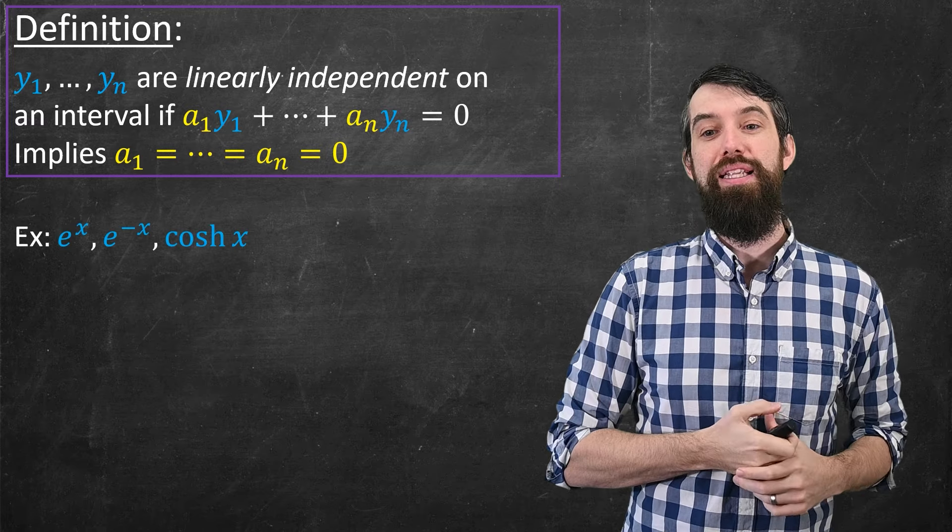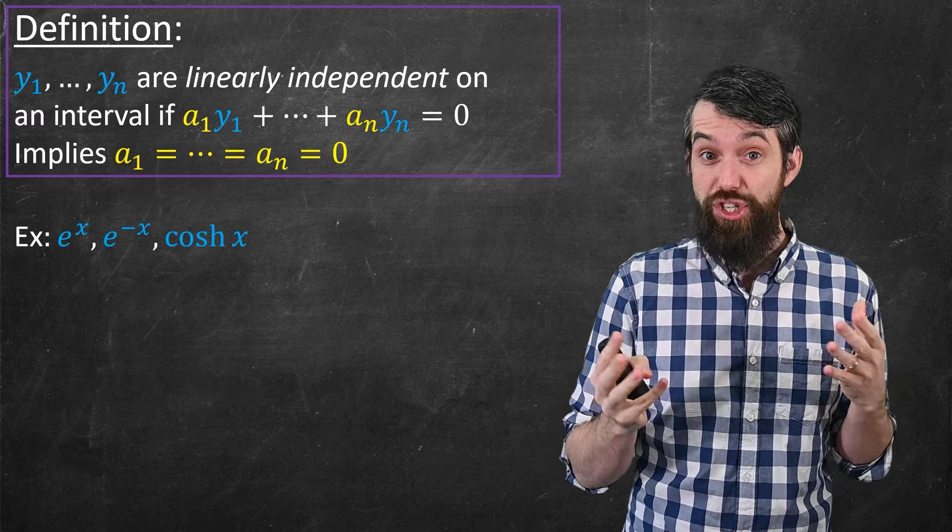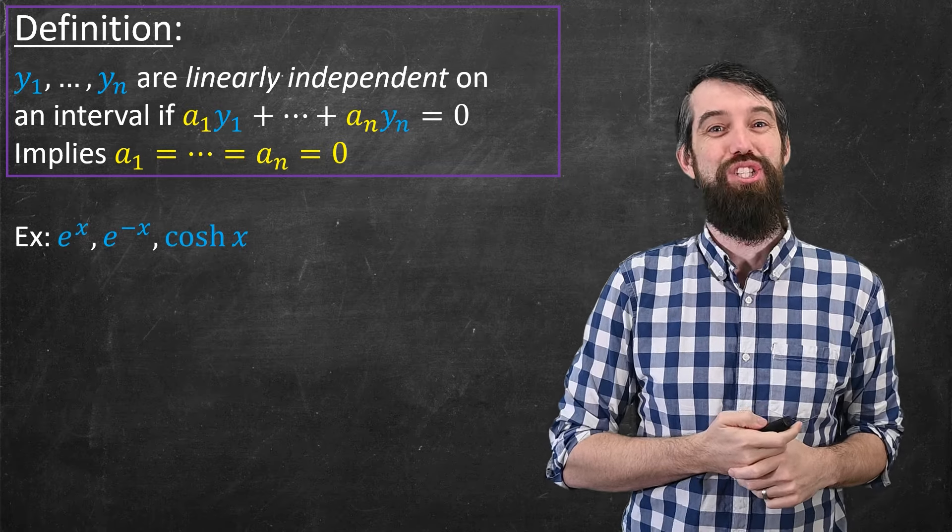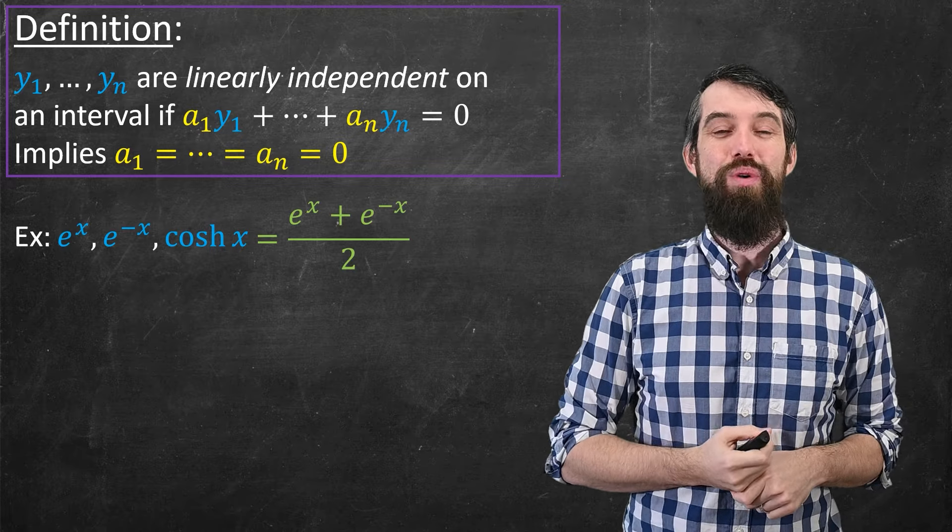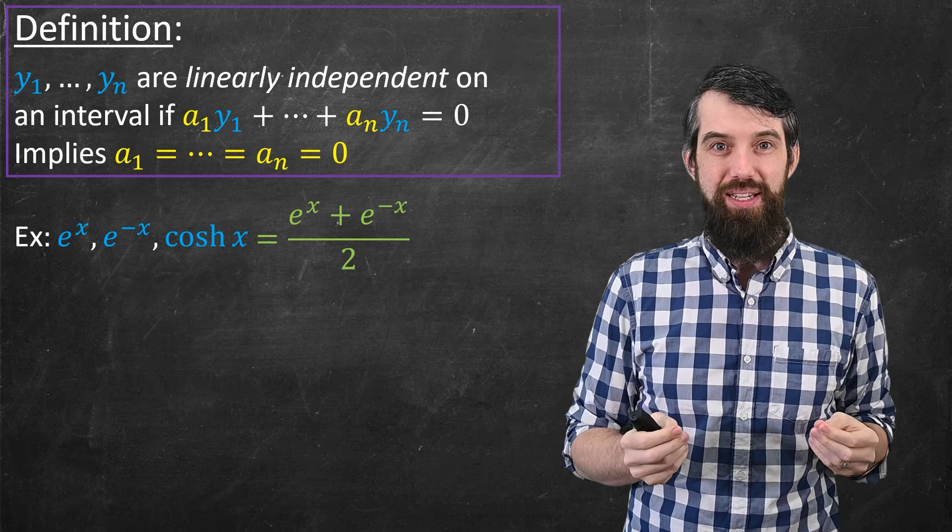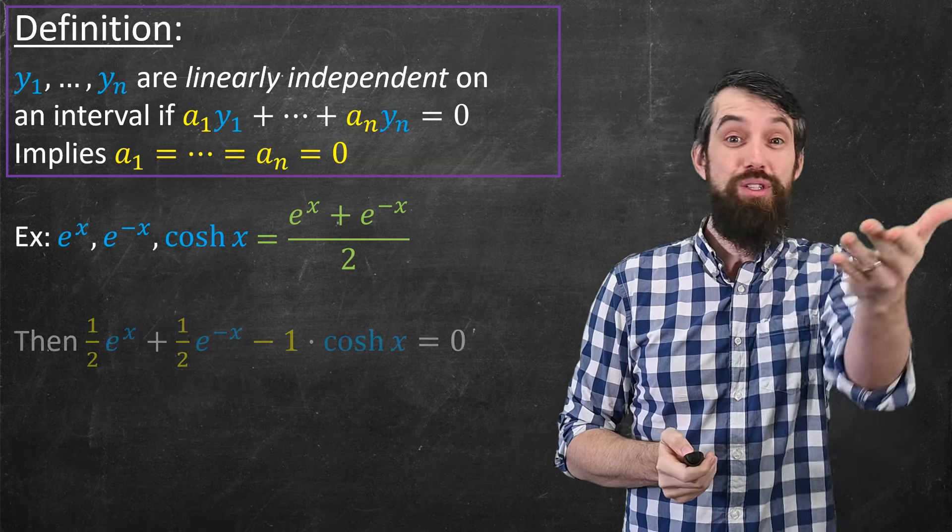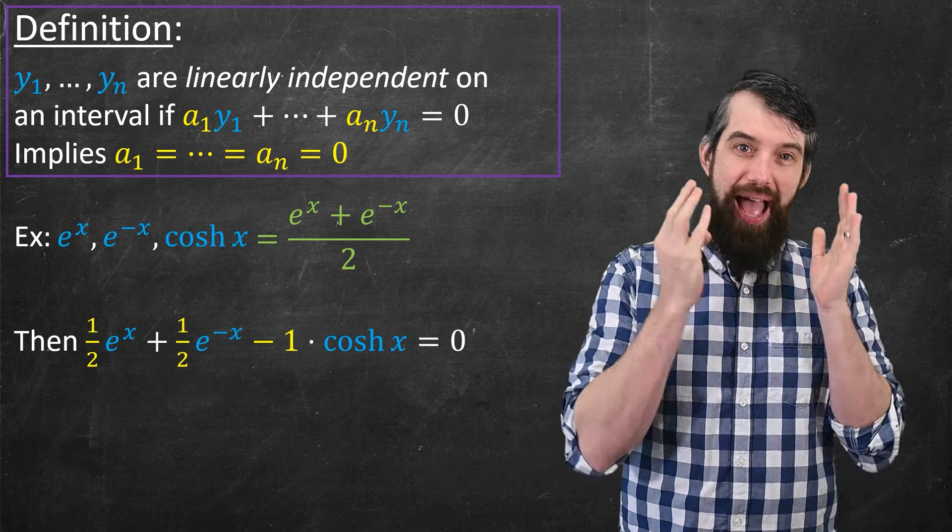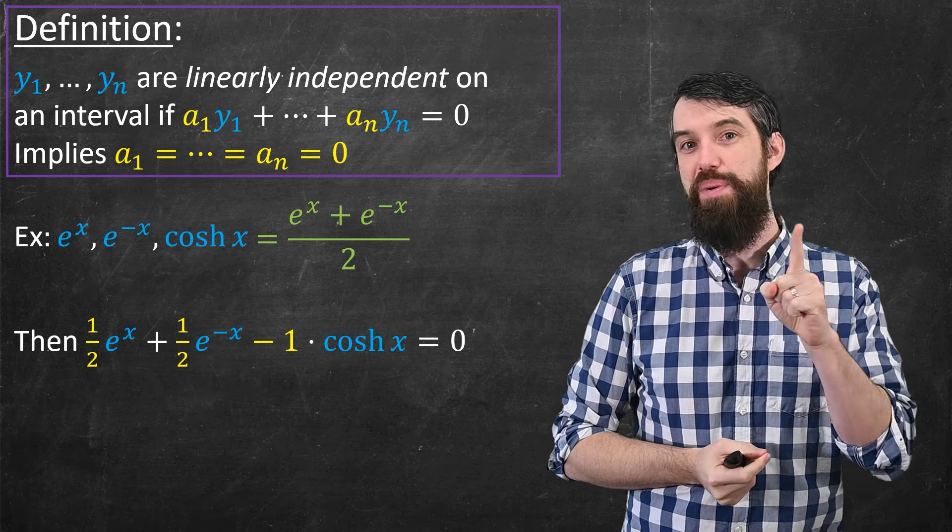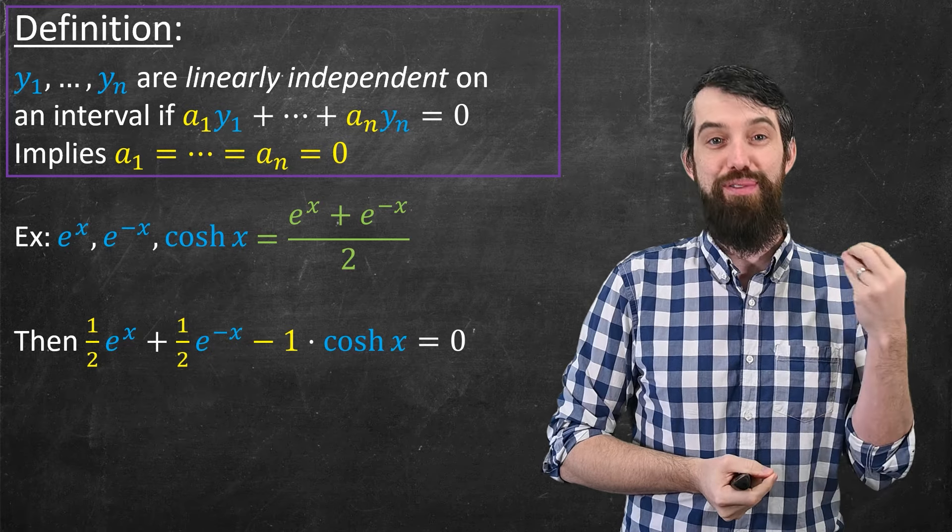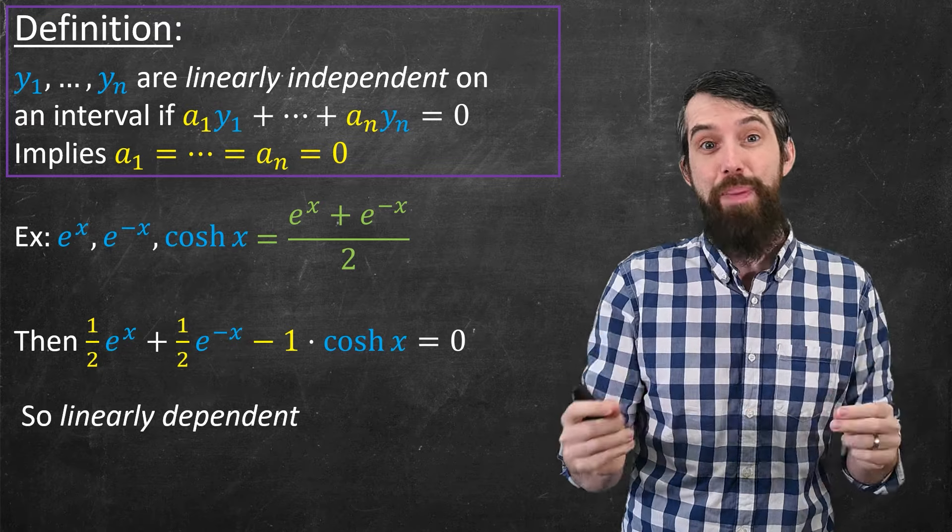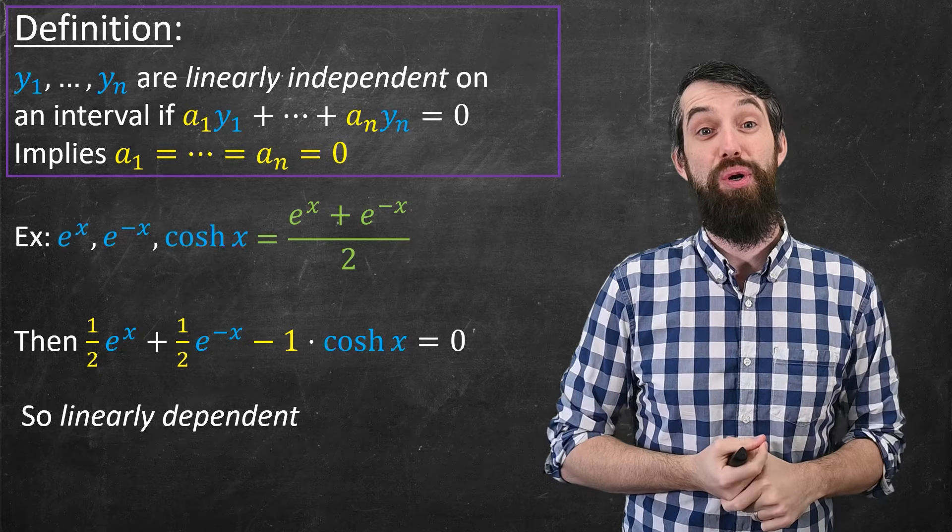So as an example, let's consider the following three functions: eˣ, e⁻ˣ, and the hyperbolic cosine of x, which equals (eˣ + e⁻ˣ)/2. So what that means is that for these three functions, there's a way to add them up to zero: (1/2)eˣ + (1/2)e⁻ˣ - cosh(x). Given its definition in terms of exponentials, this just adds up to zero. And that tells us that these are linearly dependent, which is the opposite of linearly independent.